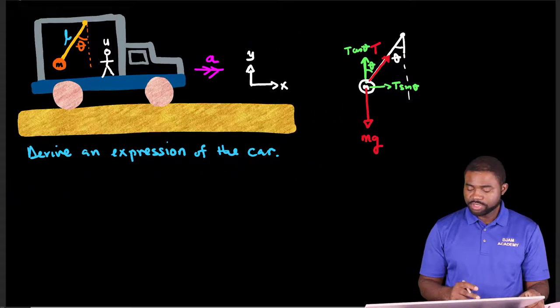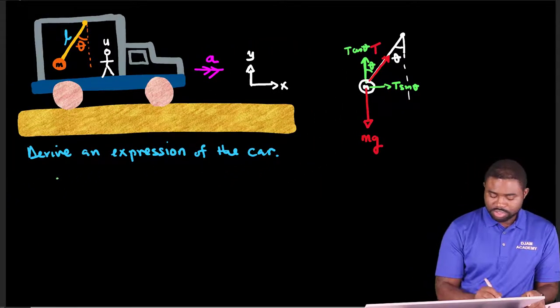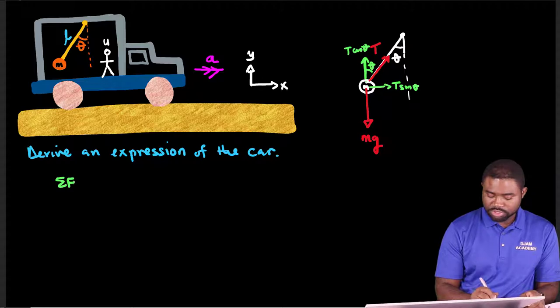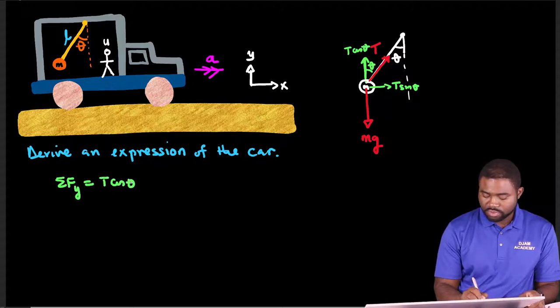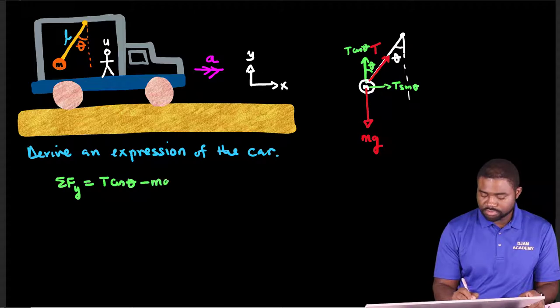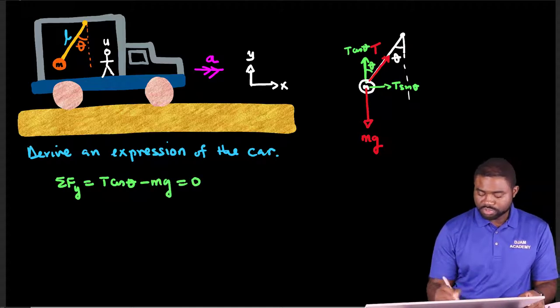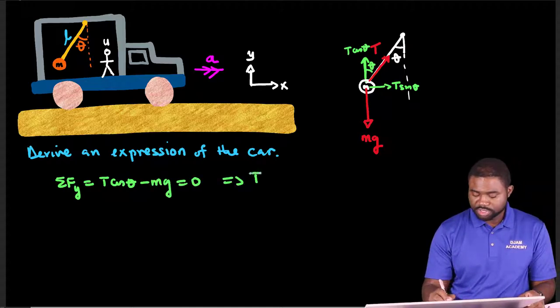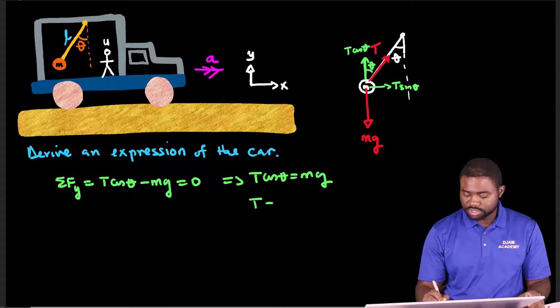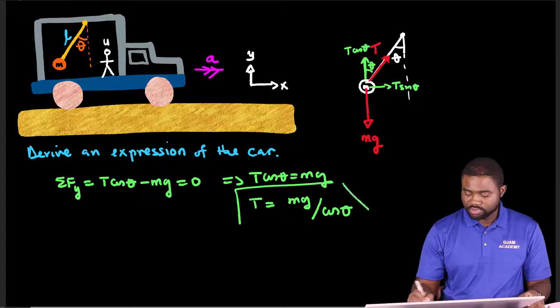So what this means is that the sum of forces along the y direction, this is T cosine theta minus mg, this will be equal to zero. And this means that T cosine theta is equal to mg. In other words, T is equal to mg divided by cosine theta. This is the value of the expression for T.